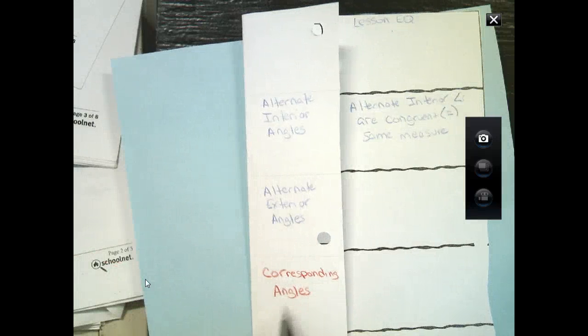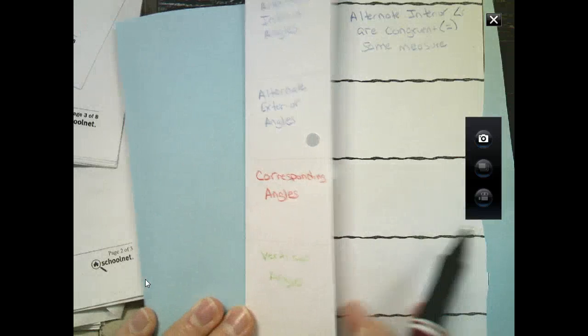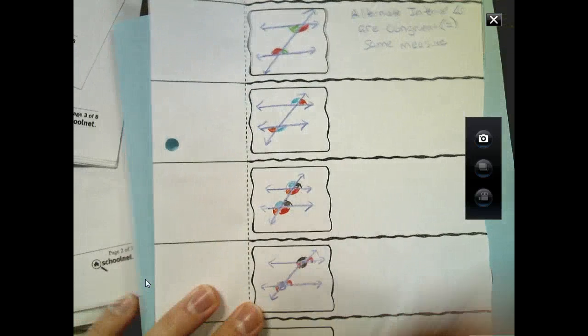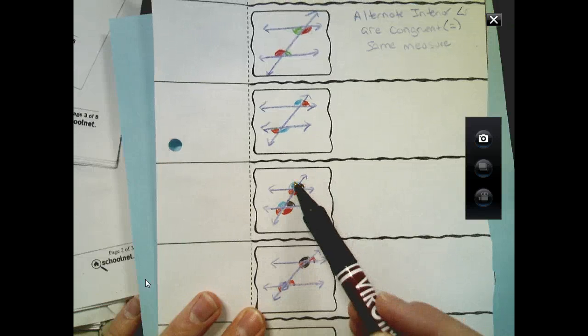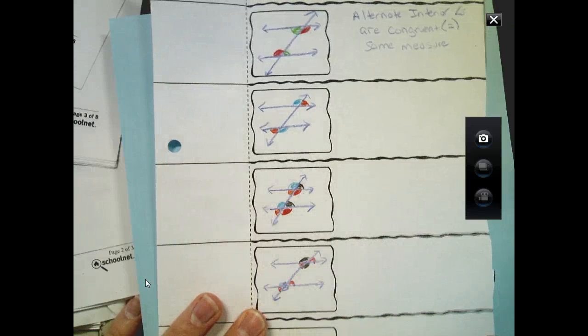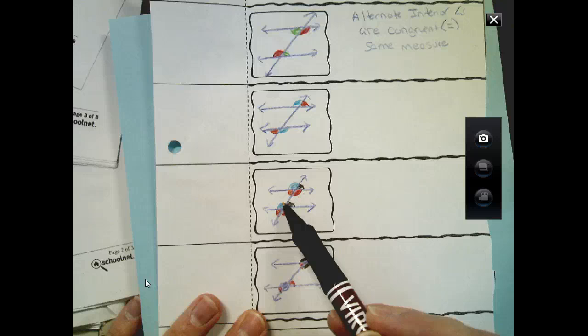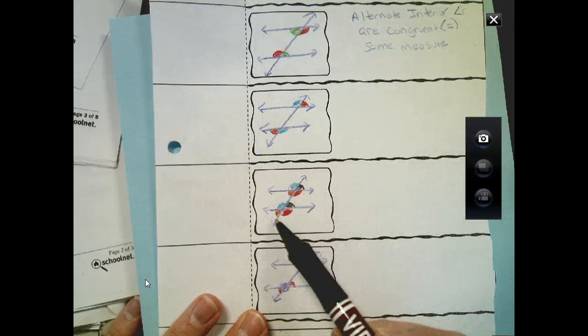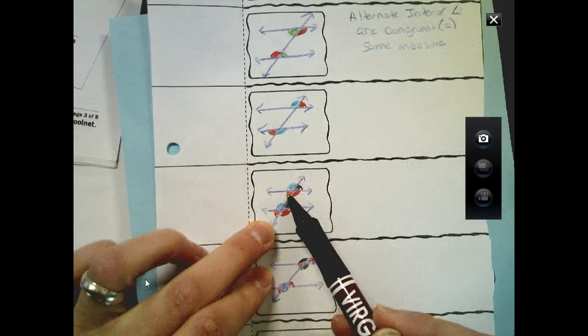The next one, as we go down, corresponding angles. When I open the foldable up, I notice I go, and the way I remember this, I remember outside, inside. They're the same measure. Outside, inside. So, if you notice the blue, and then I look outside, inside, they're corresponding.